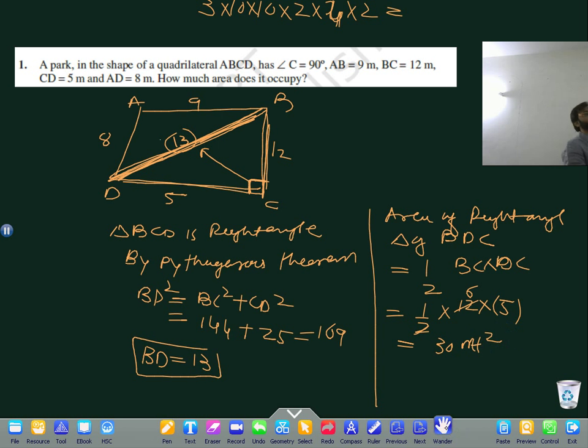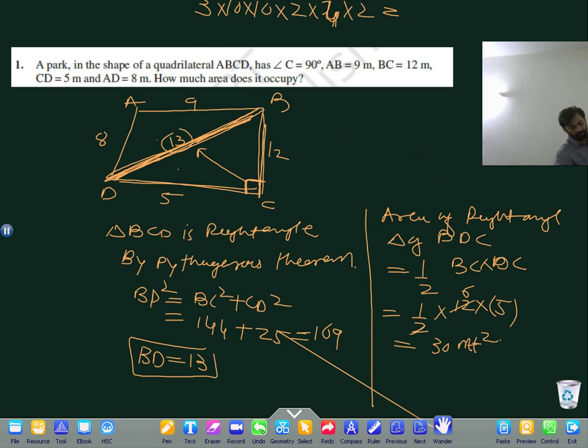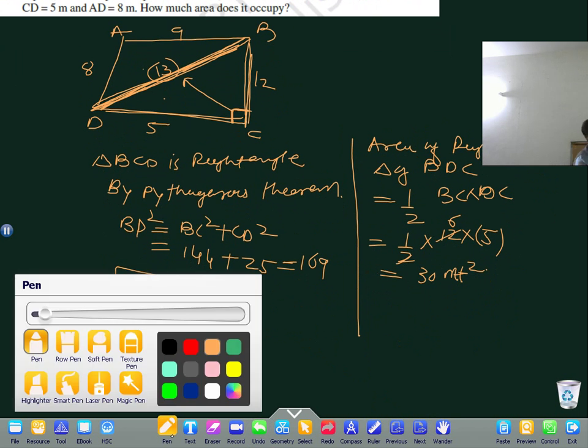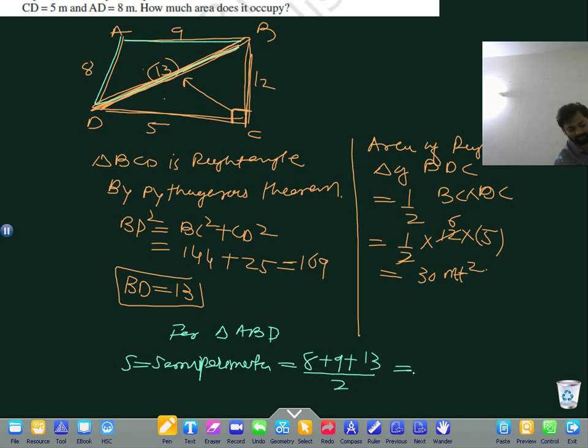Now for triangle ABD, you must mention the semi-perimeter. S, the semi-perimeter, equals 8 plus 9 plus 13 divided by 2. 9 plus 8 is 17 plus 13 is 30, divided by 2 equals 15 meters.